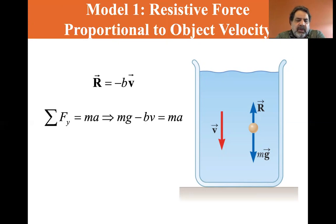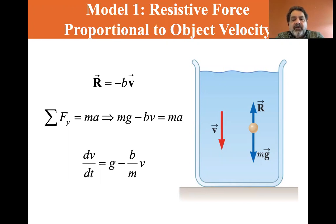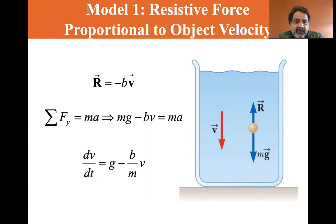The net force in the y direction equals mass times acceleration. There are only two forces: the gravitational force downward and the resistive force upward, giving mg minus bv equals ma. Solving for acceleration: dv/dt equals g minus (b/m) times v. That is the equation for acceleration.